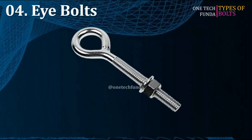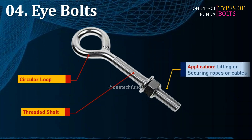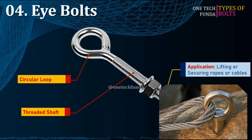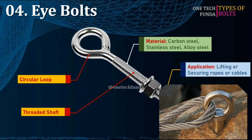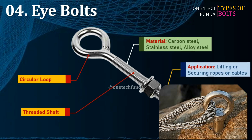Eye bolts have a circular loop on one end and a threaded shaft on the other, used for lifting or securing ropes or cables. Materials include stainless steel, carbon steel, and alloy steel. The main advantage is they can handle tension loads effectively.